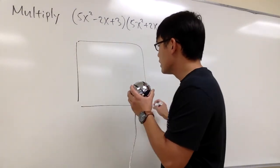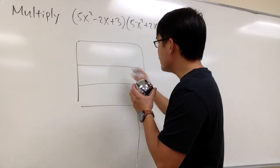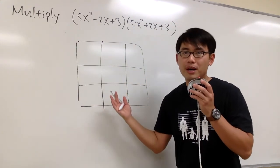I'm just going to draw a big box first, and then I will cut into 3 pieces this way and 3 pieces this way, just like a tic-tac-toe box.